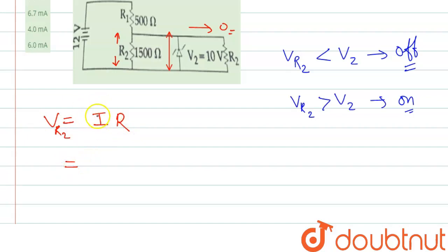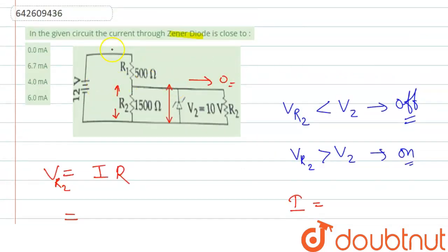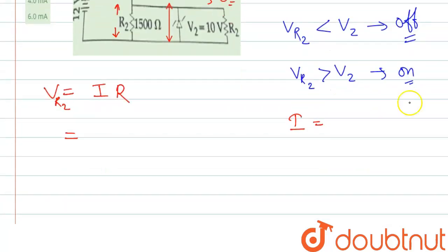So we have to find out the current, and how can we find the current? The current will be the voltage and the equivalent resistance. Here R1 and R2 are connected in series, so we can write equivalent resistance.